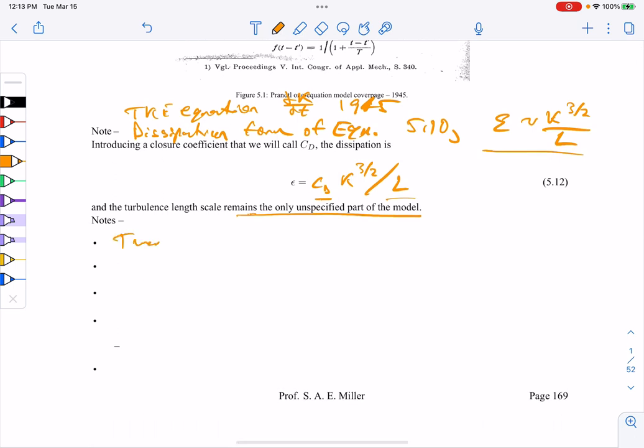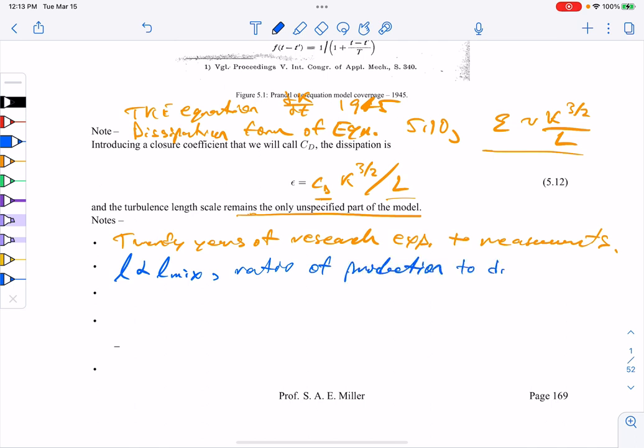And basically, like I mentioned, there's about 20 years of research experience plus measurements by a huge group of students, about 70 to 80 doctoral students. Not all of them made it through the program under his guidance. That kind of gave him the insight to try and write down and close the model. So, you know, a few things that he kind of saw in his viewpoint was he's saying that the length scale goes as something as a mixing length scale.